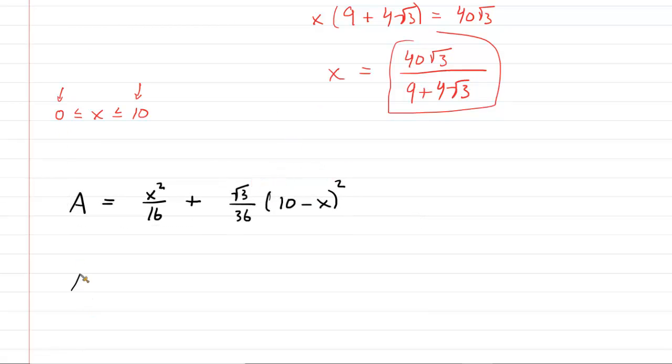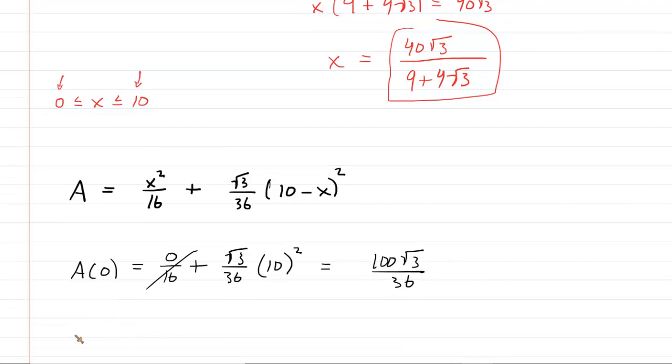So here we go. Why don't we investigate the first and lower endpoint, A of 0? So if we plug 0 in, we're going to have 0 over 16 plus radical 3 over 36. And then you're going to have 10 minus 0, which is 10. So this just becomes 10 squared. If you simplify that, this cancels. You're going to end up with 100 radical 3 over 36. In a moment, we'll punch that into a calculator to see what that actually equals. Now, unfortunately, we have to plug in 10, the upper bound. And so you're going to have 10 squared over 16. Notice when you plug 10 in over here, you're going to have 10 minus 10, which is just 0. So that would entirely zero that out. So we can just write this as 100 over 16.